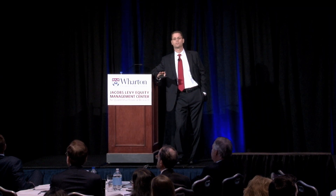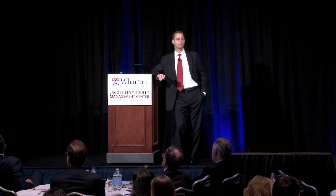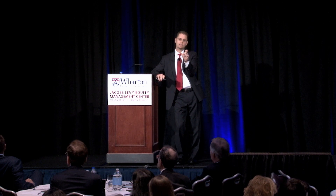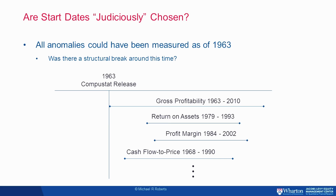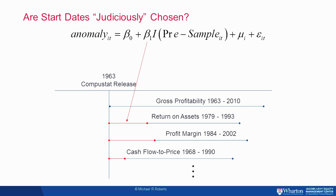I want to exploit asynchronicity in sample periods that researchers used to identify anomalies. Gross profitability was discovered over 1963–2010; return on assets from 1979–1993; profit margin 1984–2002, and so on. I want to know what happens if I extend the start date of the in-sample period used in the original study by just a few years — what happens to the anomaly return, the CAPM alpha, or the Fama-French three-factor alpha if I just pull it back a little bit?